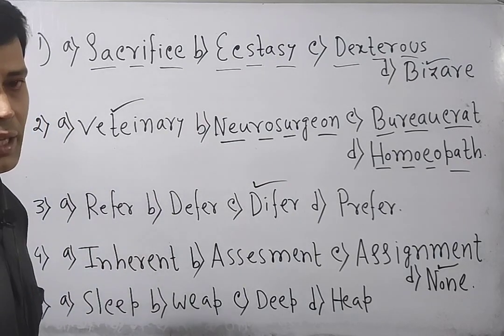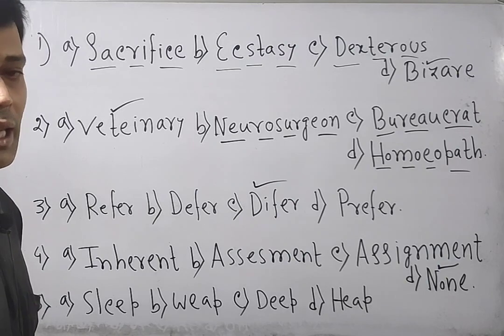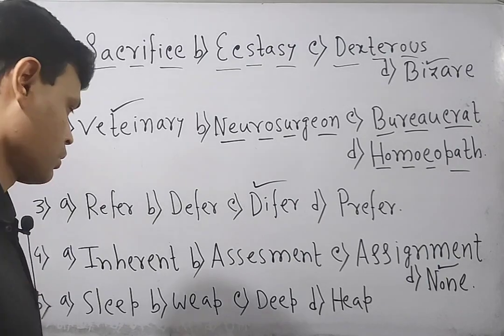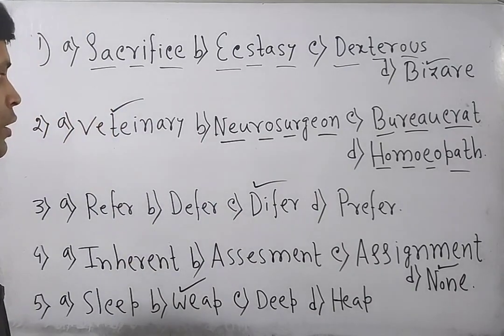We say weep means cry. The spelling should be double E, not W-E-A-P. Weep, wept, wept. So this is an incorrectly spelled word. Now go through the overall class.